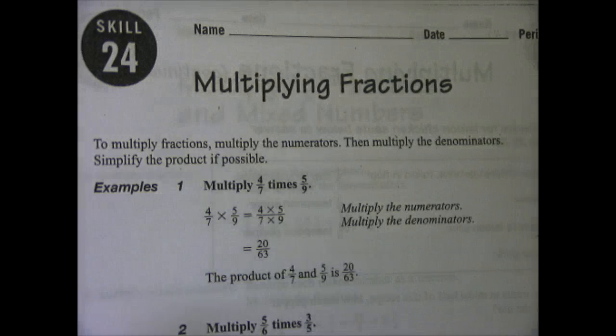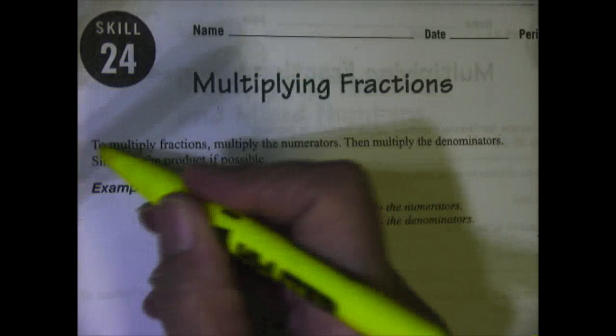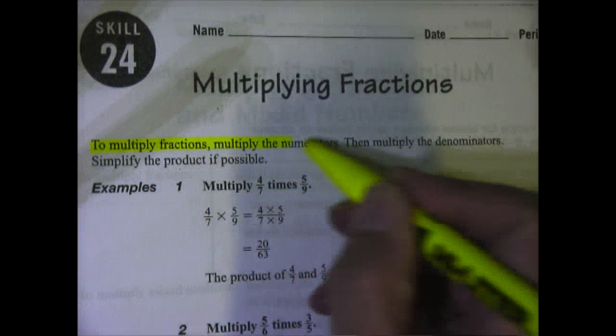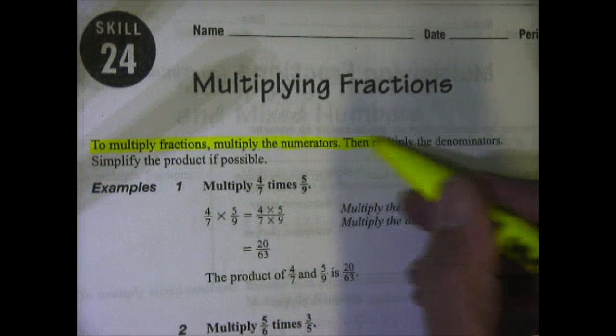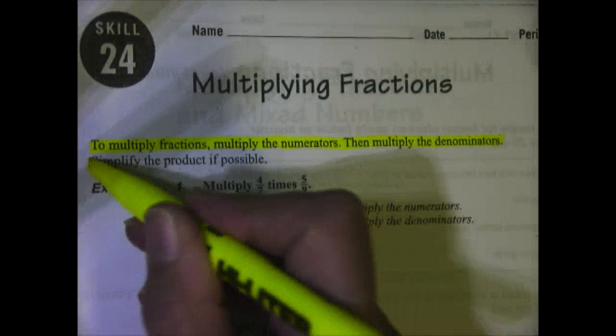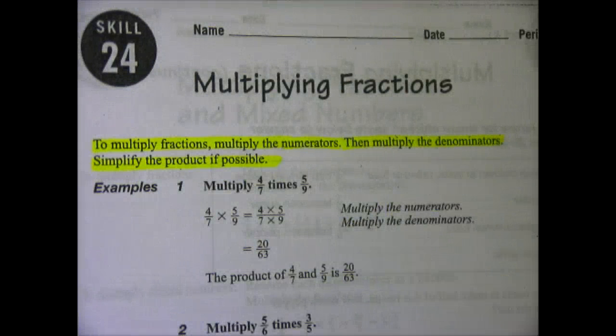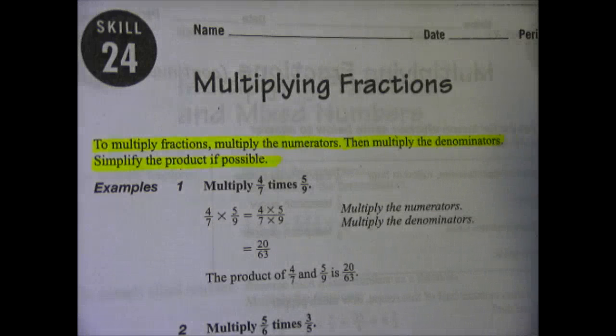So first, to multiply fractions, multiply the numerators. Then multiply the denominators and simplify the product if possible. Remember that product is the answer for a multiplication problem.